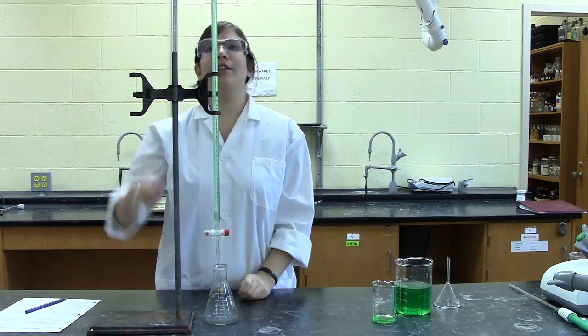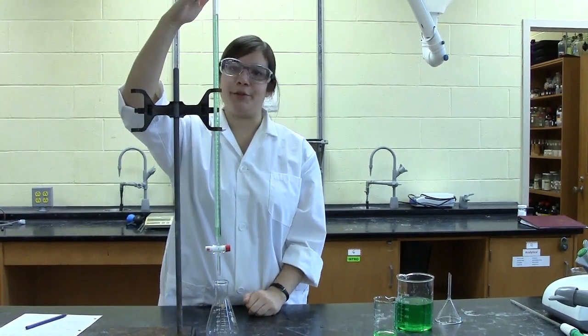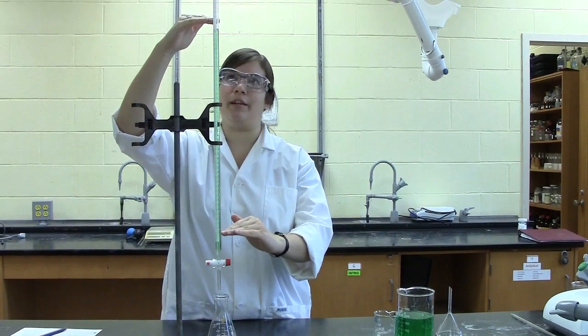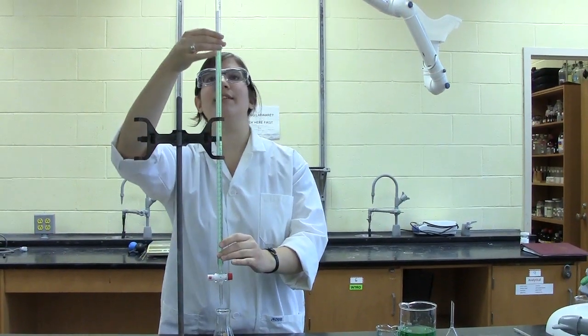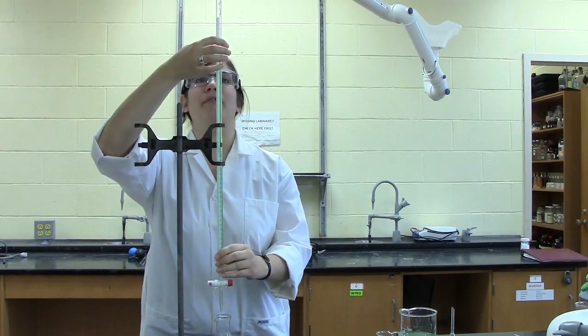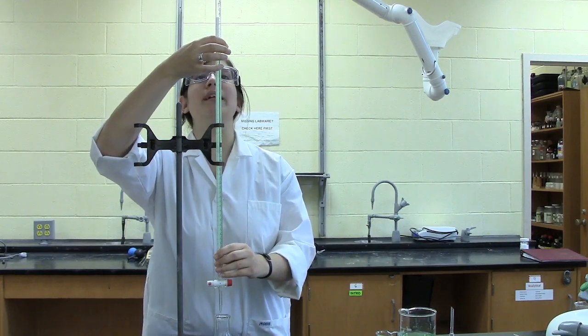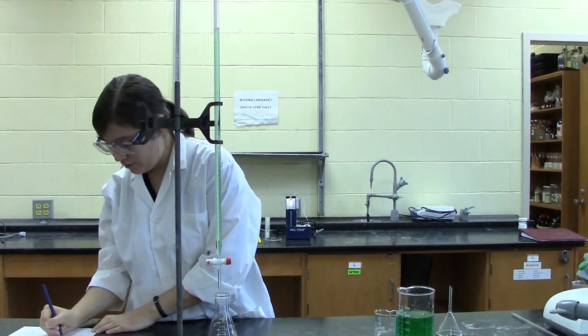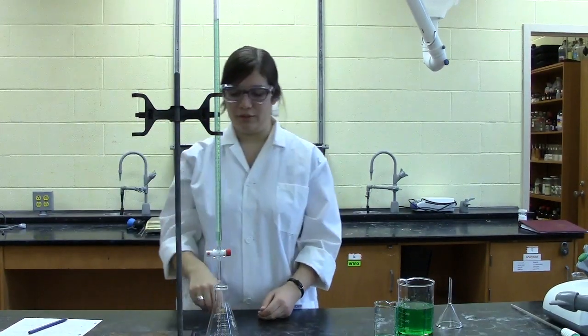Next, you can take your initial reading, reading from the top down. Burettes go from zero milliliters at the top to 50 milliliters at the bottom. So in this case, I'm reading about 5.80 from the bottom of the meniscus. It's also important that you make sure all your readings are two decimal places. Record that initial reading as you'll need it later.